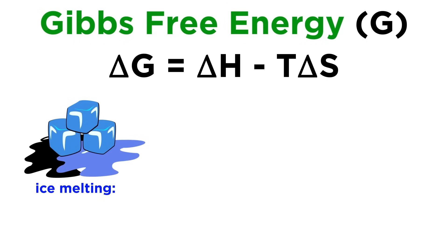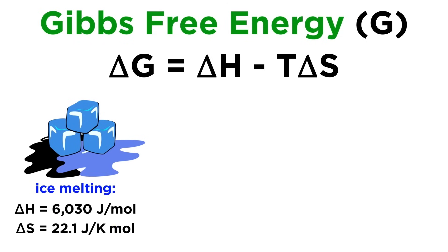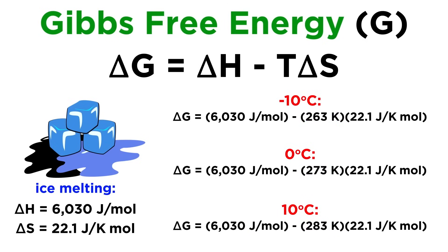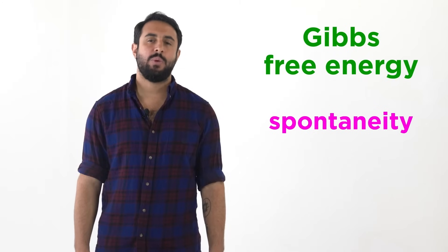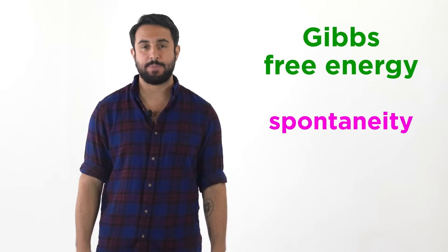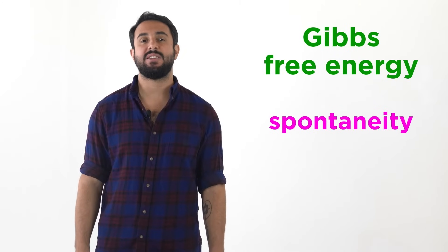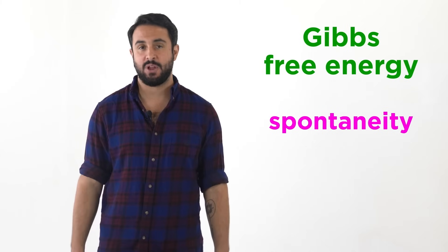To see this demonstrated, let's look at the process of ice melting with the associated ΔH and ΔS given here, and let's see whether this would be spontaneous at three different temperatures: negative ten degrees Celsius, zero, and positive ten. We can convert these temperatures into Kelvin and then plug everything into the Gibbs free energy equation. Perhaps not shockingly, we will find that ice melting is spontaneous above zero and non-spontaneous below zero. We still have more to discuss regarding Gibbs free energy and spontaneity, so let's go ahead and get more quantitative with these calculations.